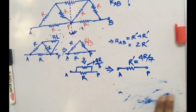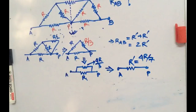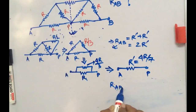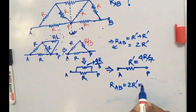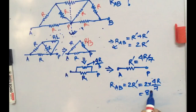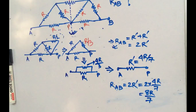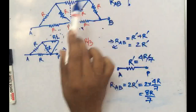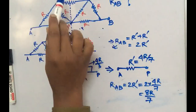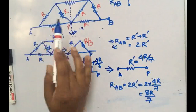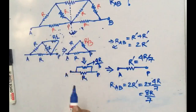So now the equivalent resistance R_AB is 2·r_dash, which is 2 × 4R/7 = 8R/7. This is a very simple method — by using a vertical symmetric line which divides the circuit into two parts that are mirror images of each other, you can calculate the equivalent resistance of a symmetric network. Thank you.